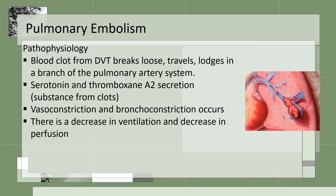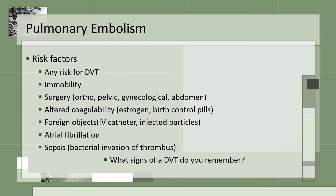The next respiratory disorder is pulmonary embolism. The pathophysiology: a blood clot from a DVT breaks loose, travels, and lodges in a branch of the pulmonary artery system. The clot secretes serotonin and thromboxane A2, causing vasoconstriction and bronchoconstriction in that lung, resulting in decreased ventilation and decreased perfusion. Risk factors for pulmonary embolism include any risks for DVTs: immobility, surgery — especially ortho, pelvic, gynecological, and abdominal surgeries — which have increased risk for DVT.